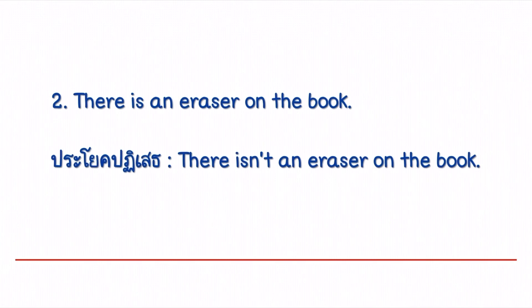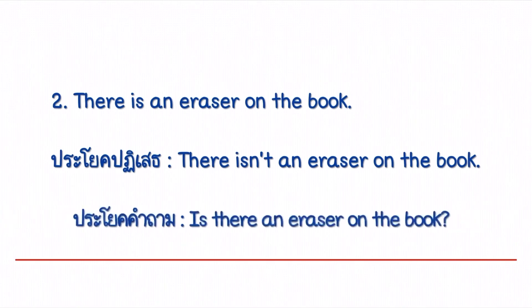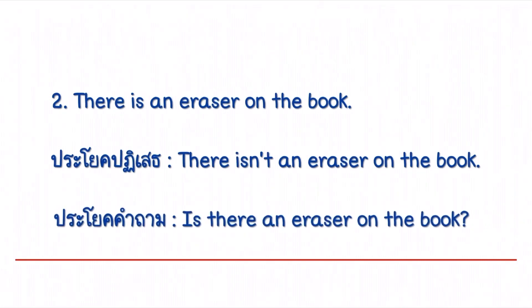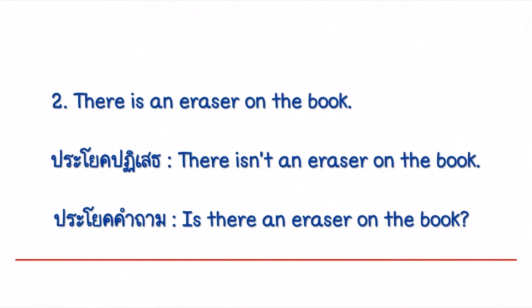ตัวอย่างข้อที่ 2 บอกว่า There is an eraser on the book มียางลบหนึ่งก้อนอยู่บนหนังสือ ถ้าแต่งเป็นประโยคปฏิเสธ นักเรียนก็เติม not เข้าไปข้างหลัง is จะได้ว่า There isn't an eraser on the book แปลว่าไม่มียางลบหนึ่งก้อนอยู่บนหนังสือเลย และประโยคคำถามคือ Is there an eraser on the book? มียางลบอยู่บนหนังสือไหม? ถ้ามีตอบ Yes, there is ถ้าไม่มีตอบ No, there isn't